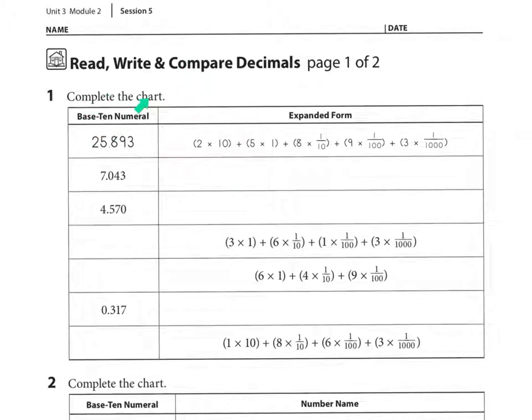Here we're going to see complete the chart. The first one's been done for us. We have the base 10 numerals and we have the expanded form. Looking at the first number, we see 7, decimal point, 043. So here we're thinking 7 is in what place value? 7 is in the 1's place value.